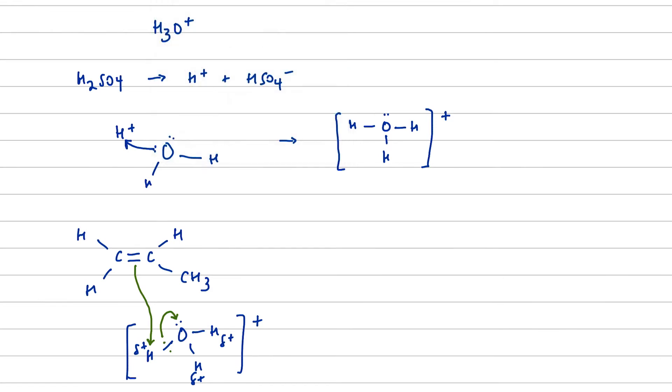So we are going to have our intermediate carbocation. Once again, the hydrogen is going to add to the carbon with the fewest alkyl groups because that gives us the most stable carbocation. And we've obviously got a water molecule left over.